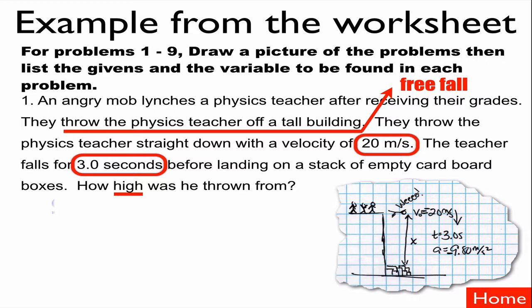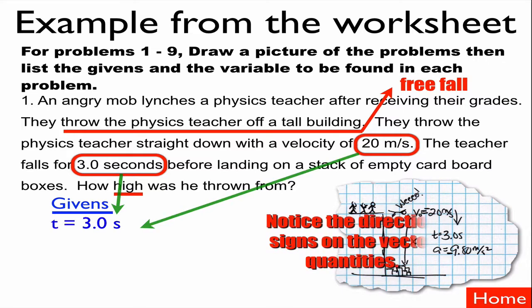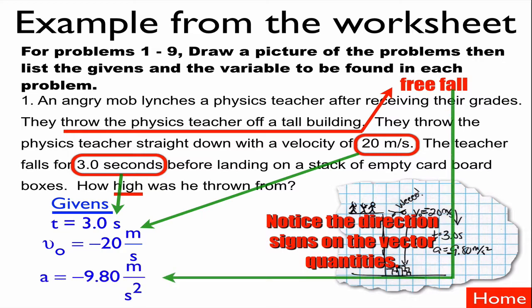I made it negative because going down is negative. Time is three seconds, and the acceleration is negative 9.80 meters per second squared. The question is asking for how high he's thrown from, so that's going to be a distance or the x variable. Here are our givens: time is three seconds, initial velocity is negative 20 meters per second because he's going down, and since he's in free fall the acceleration is negative 9.8 meters per second squared — that's an implied given. x-naught is zero, and the unknown we're looking for is x.